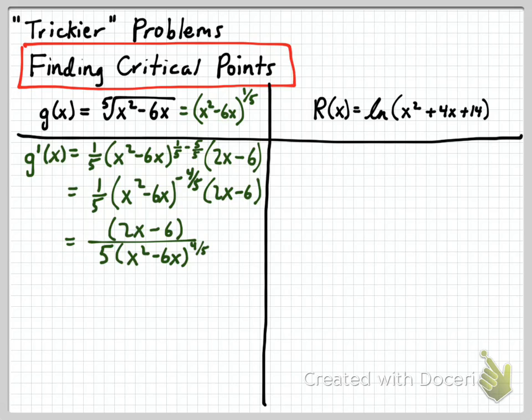Now if you think about it, we could also rewrite that denominator now in terms of the radical form. And if we write it in radical form, we see that the root, remember roots grow in the ground, so that's the root right there, the 5. And so we have 5 multiplied by the 5th root of all this stuff, and all that stuff is x squared minus 6x, and then that all gets raised to the 4th power.